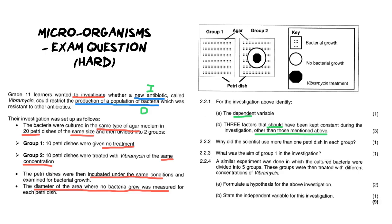Now question 2.2.2, why did the scientists use more than one petri dish? Remember if we always use more than one sample we are increasing the reliability. Remember reliability is to increase the sample size, redo the experiment or calculate an average.